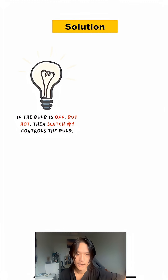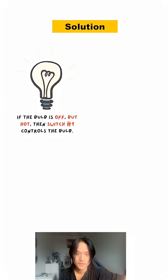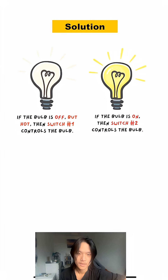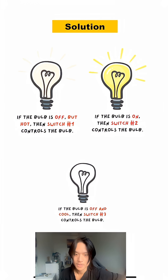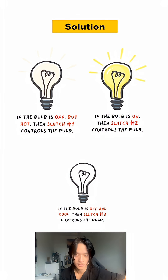Now, if the bulb is off but hot, then clearly switch number one controls the bulb. And if the bulb is on, then switch two simply controls the bulb. Finally, if the bulb is off and cool, that means switch number three controls the bulb.